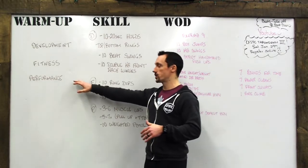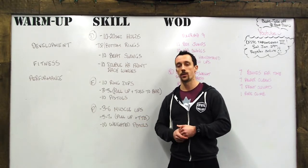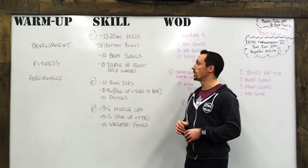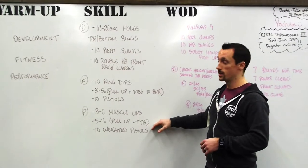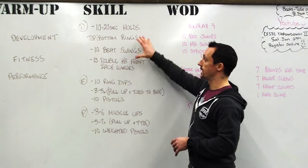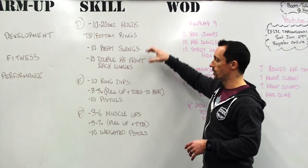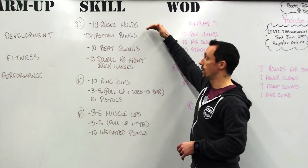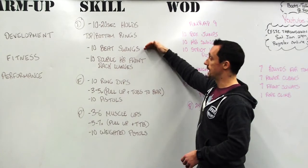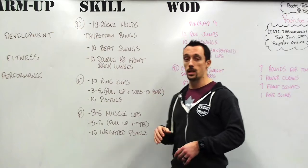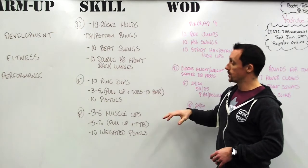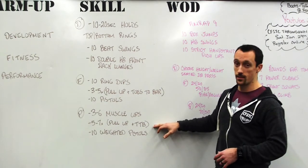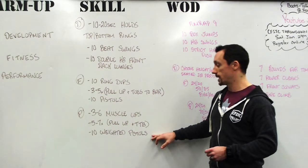If kettlebell swings are programmed and the guideline says 50 pounds but you're really comfortable at 35, that's fine — fitness is a guideline. The performance stream gives you something a little extra to take it to the next level. Here's an example from programming back in December: it was written in three sections for skill work only, and you would choose either development, fitness, or performance for each movement.